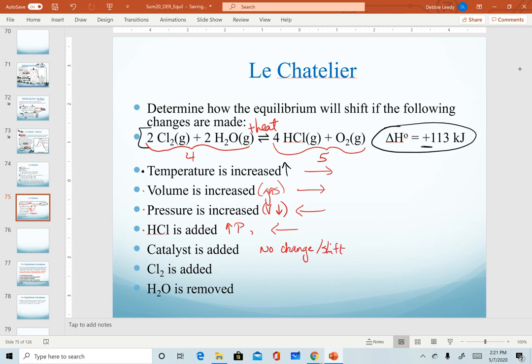If we add Cl2, recognize that Cl2 is on the reactant side. If I add a reactant, that will cause my reaction to want to use that up, shifting toward the products. If I remove H2O, H2O is a reactant. I'm removing a reactant, so the system wants to undo that stress. It will shift back to the left to replace that reactant.